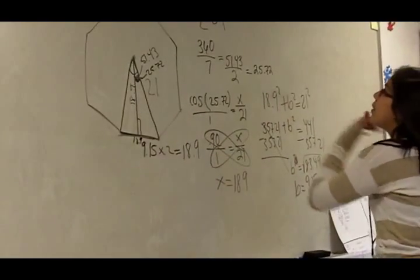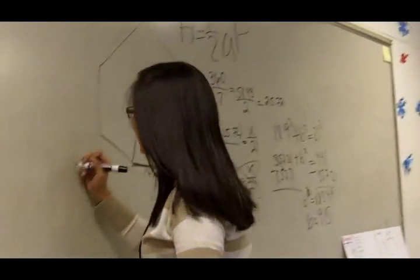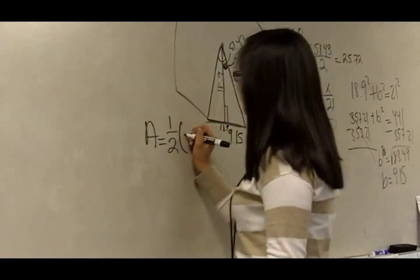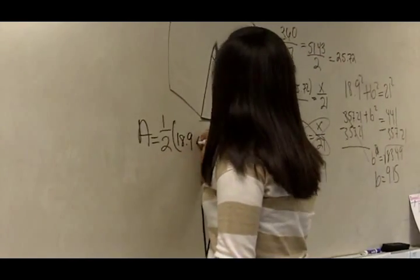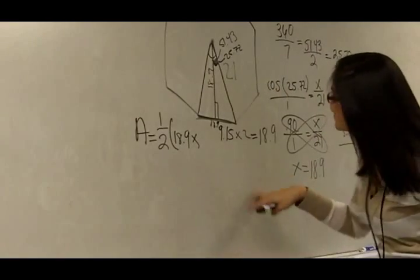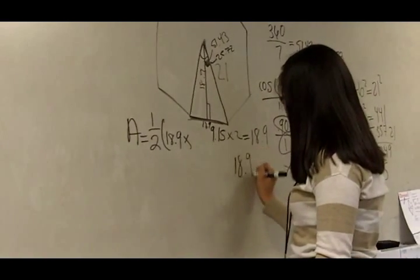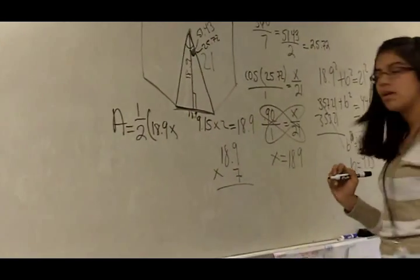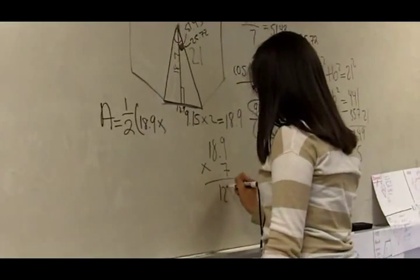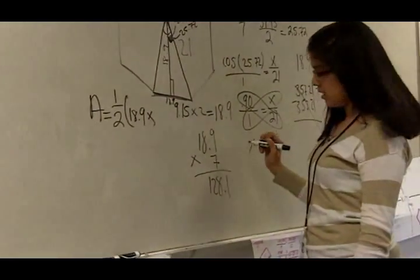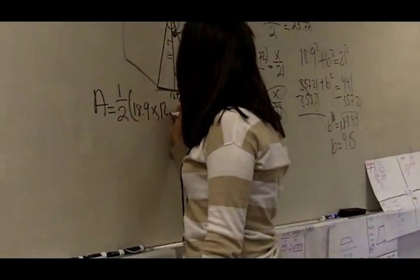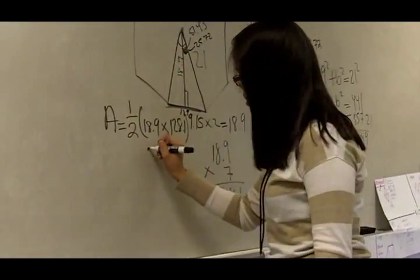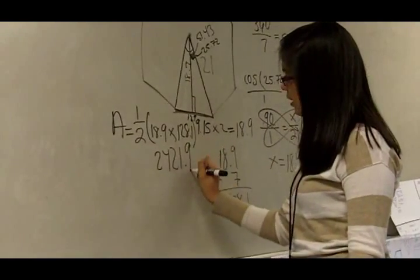Now you can plug all of this into your formula. A equals one-half, your apothem which is 18.9 times the perimeter. 18.3 times 7 gives you 128.1, and you put this into the formula.